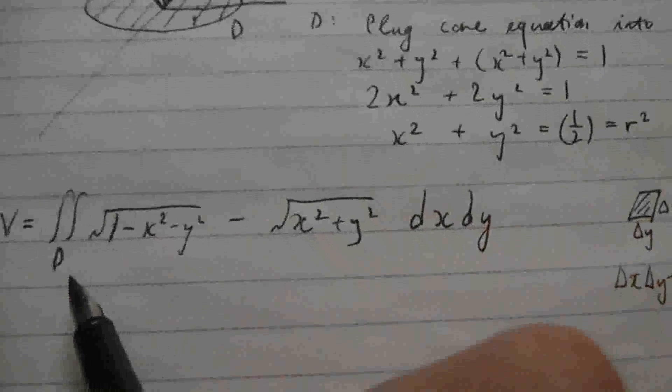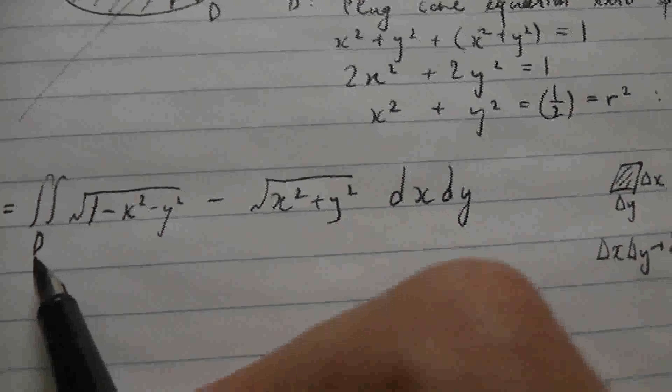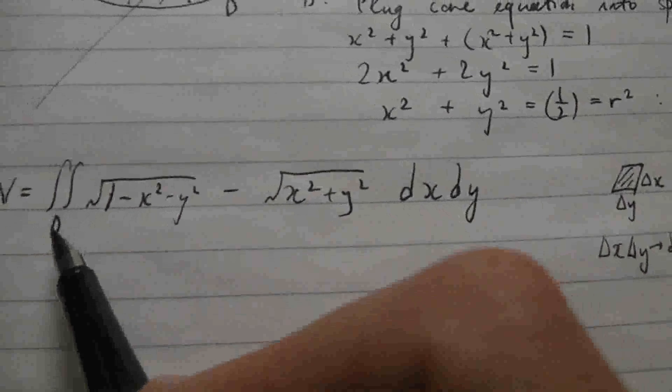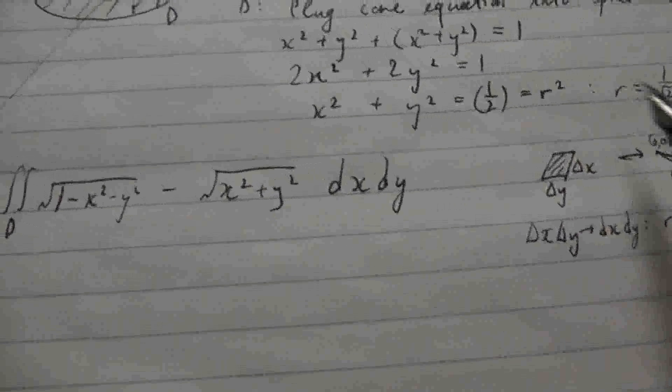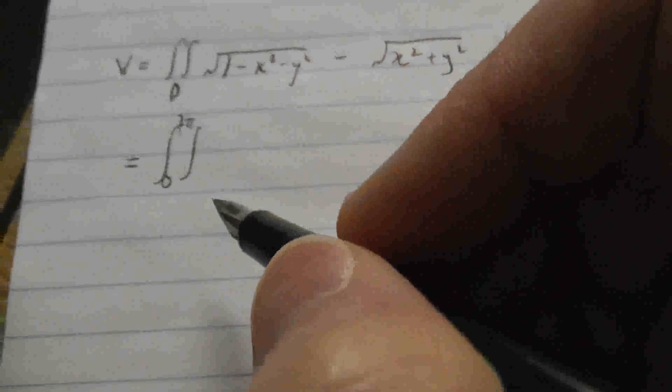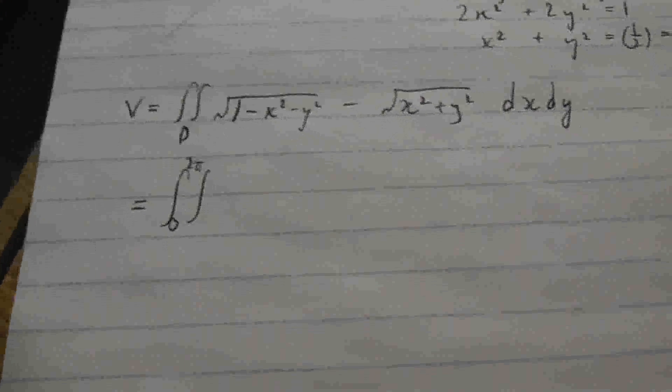And also, we're working with a circular region. That's another clue that you should be using polar coordinates. This region d is very easy to describe using r and theta. So let's first of all do that. We want theta to vary from 0 to 2 pi, and r will vary from 0 to the radius of the circle, which is 1 over root 2.